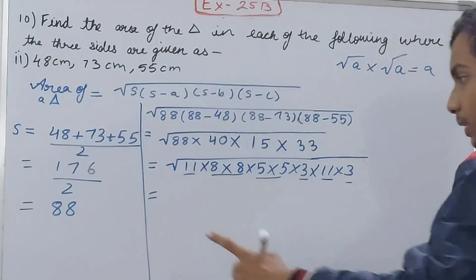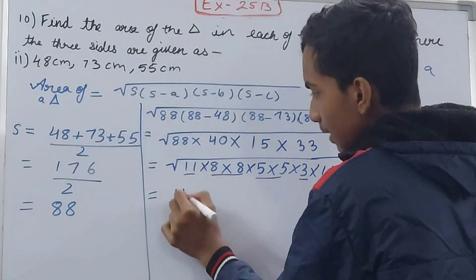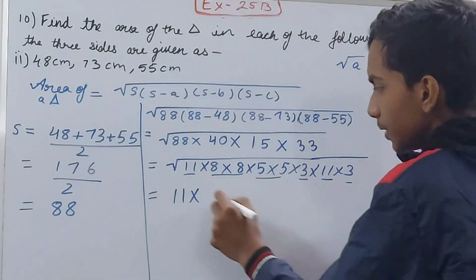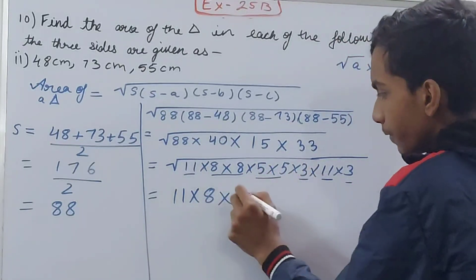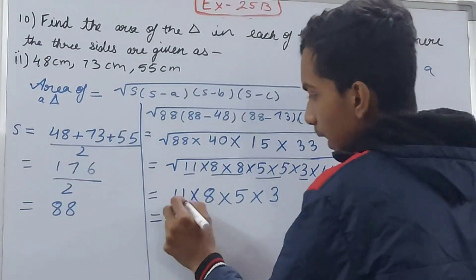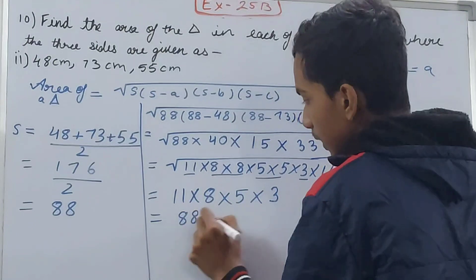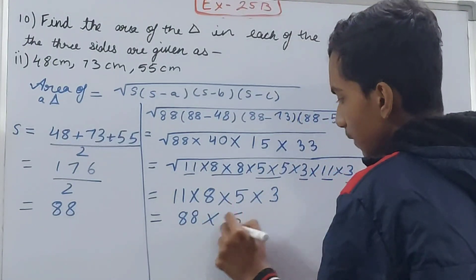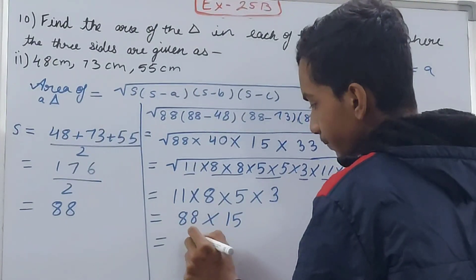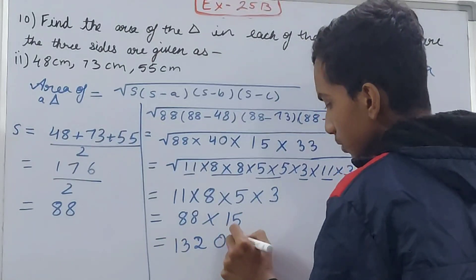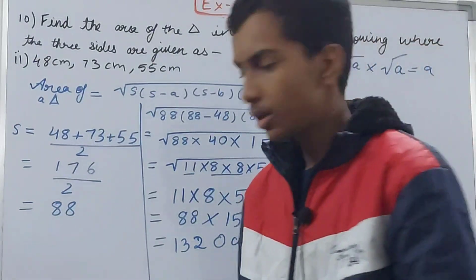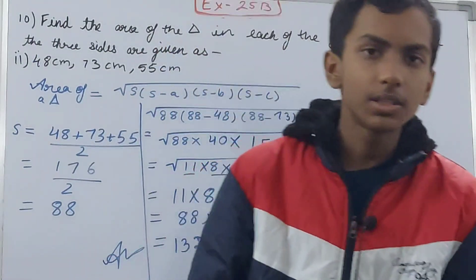Using √a × √a = a: 11 × 11 gives 11, 8 × 8 gives 8, 5 × 5 gives 5, and 3 × 3 gives 3. Now multiply: 8 × 11 = 88, then 5 × 3 = 15, and 88 × 15 = 1320. So the area is 1320 square centimeters. That is the final answer.